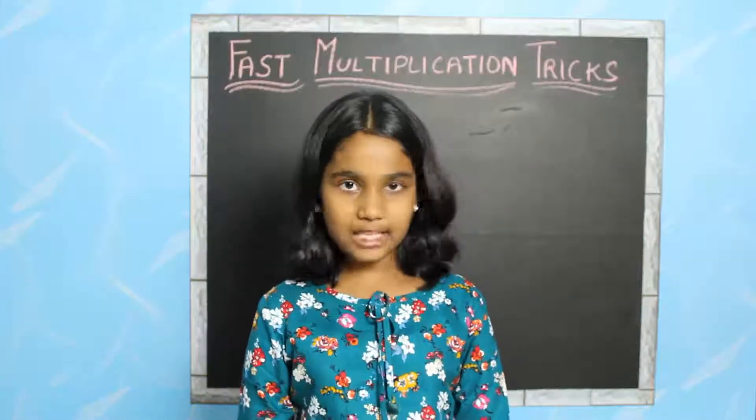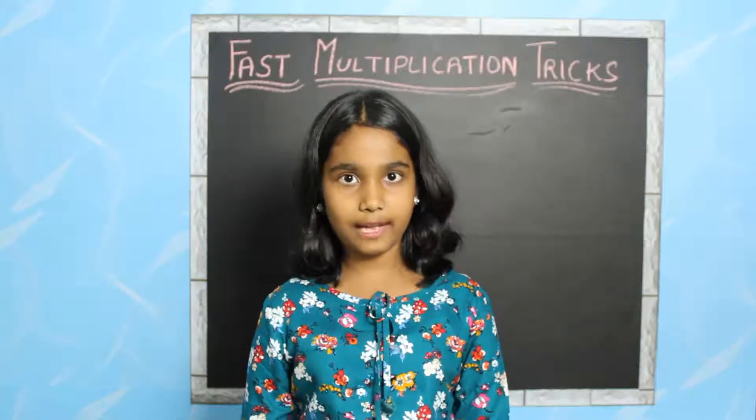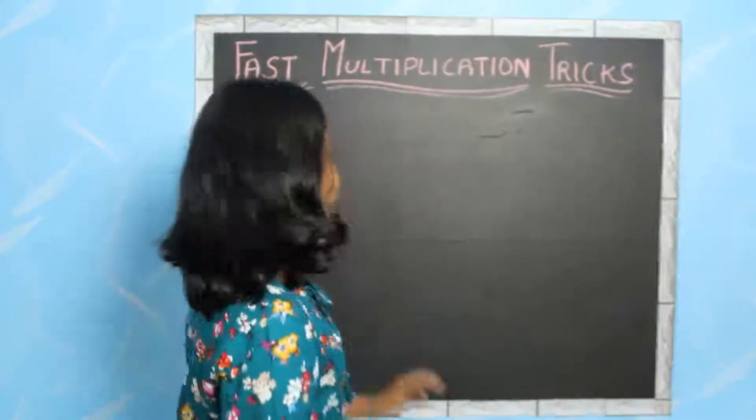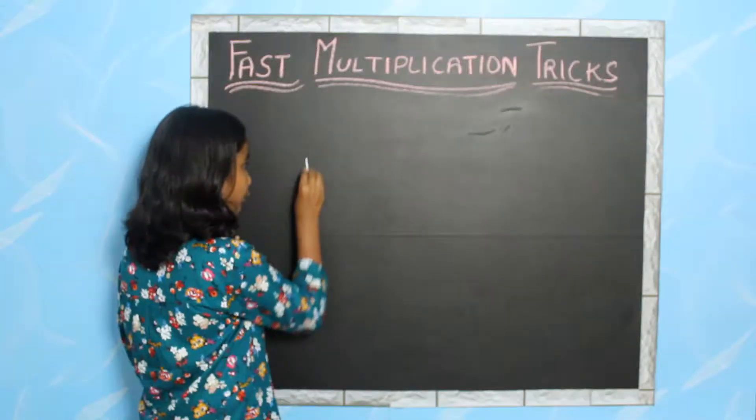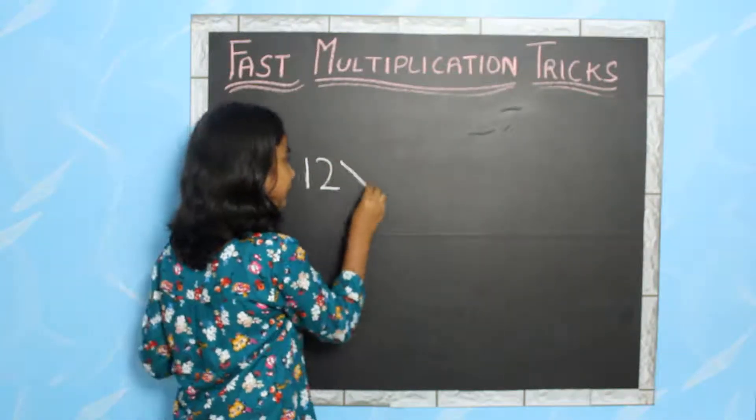So now let us see how to fast multiply 2-digit numbers by 11. I am going to take an example. 12 into 11.